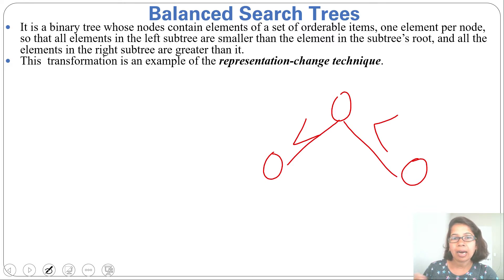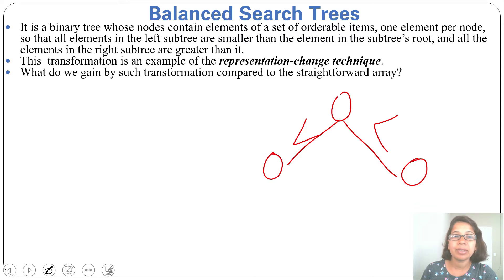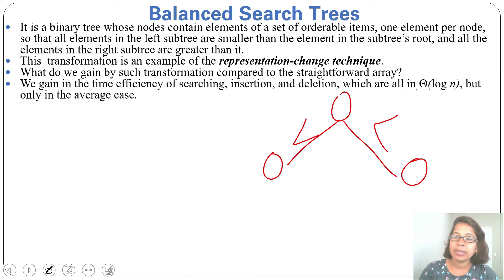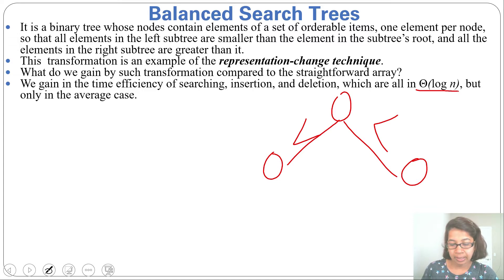What is the advantage of doing this representation change? It is time complexity. Rather than a straightforward array, if you are doing searching, insertion, and deletion in a binary search tree, running time will be θ(log n). But that is only in the best case and average case. In the worst case, it may be θ(n).